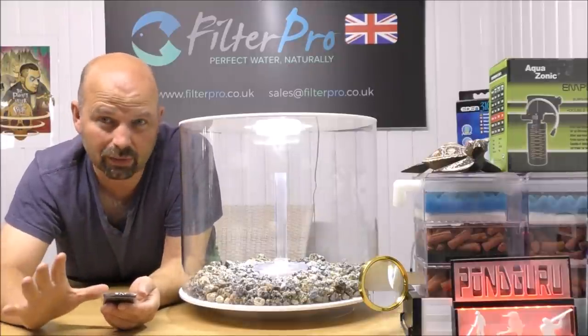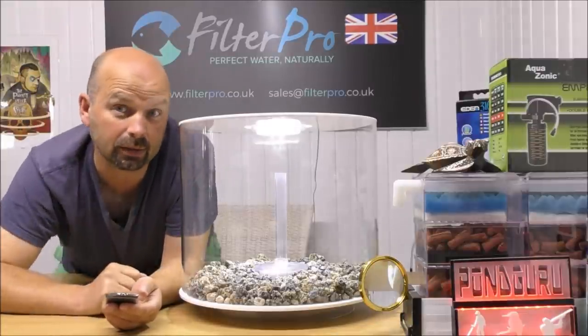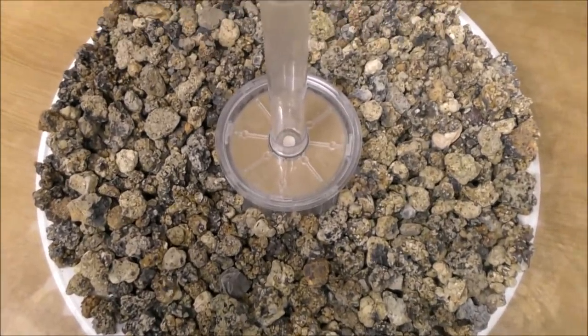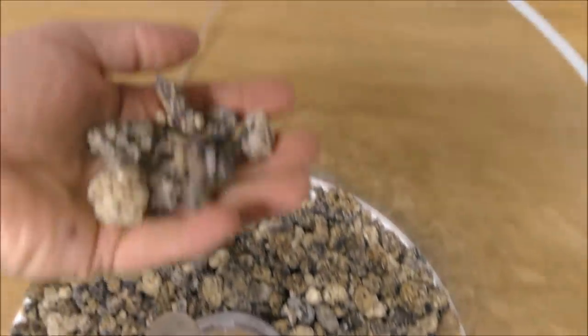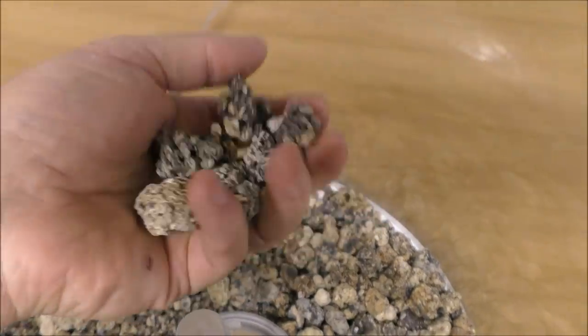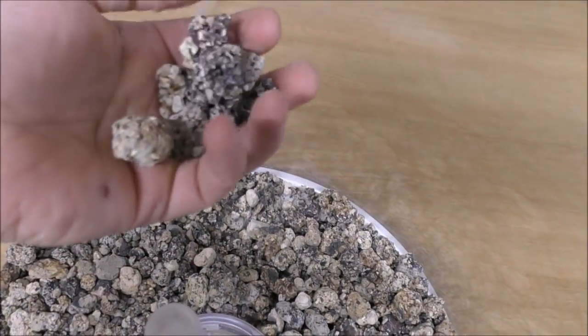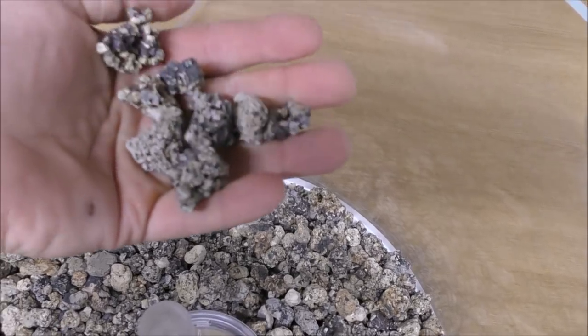What's never been improved since the very first BiOrb is the filtration, and that's what we're here to do today. Right, this is our filter and our filter media. This is often called Lava Rock, it's actually a ceramic man-made filter media called Alpha Grog. This is the E25 size, they also do a bigger size which is E40.